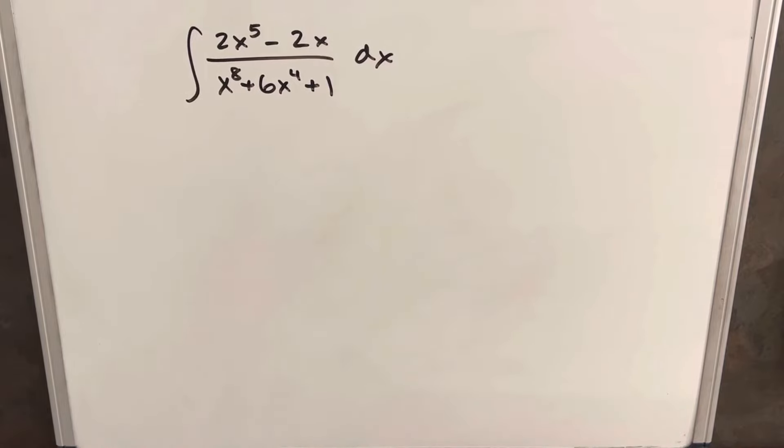Hey, thanks for watching. We have this nice integral on the board. We'll have the integral of 2x to the 5th minus 2x over x to the 8th plus 6x to the 4th plus 1 dx. Okay, let's get started with this.